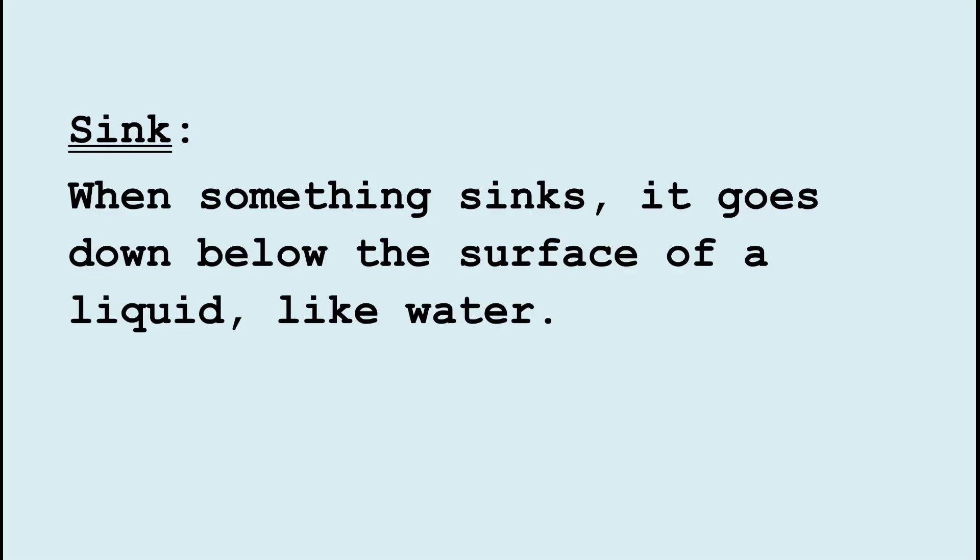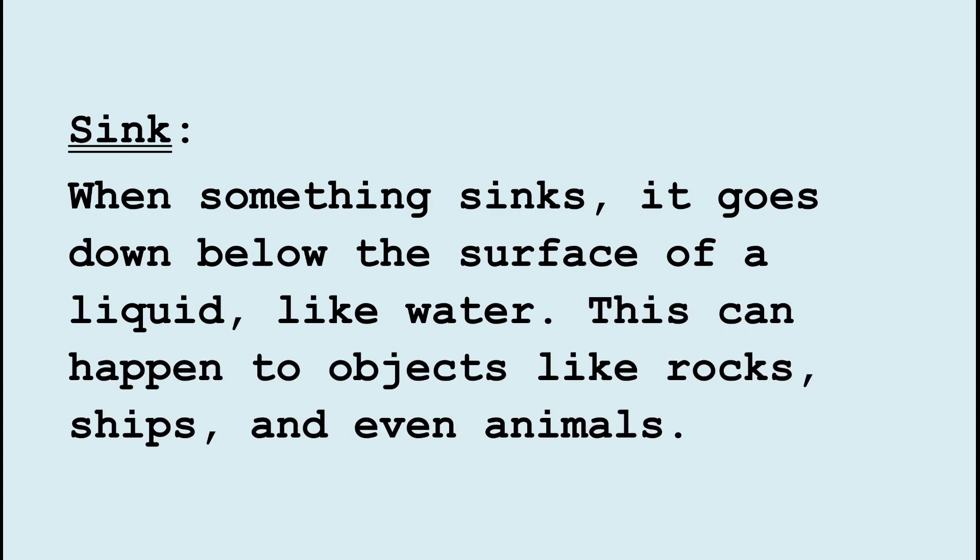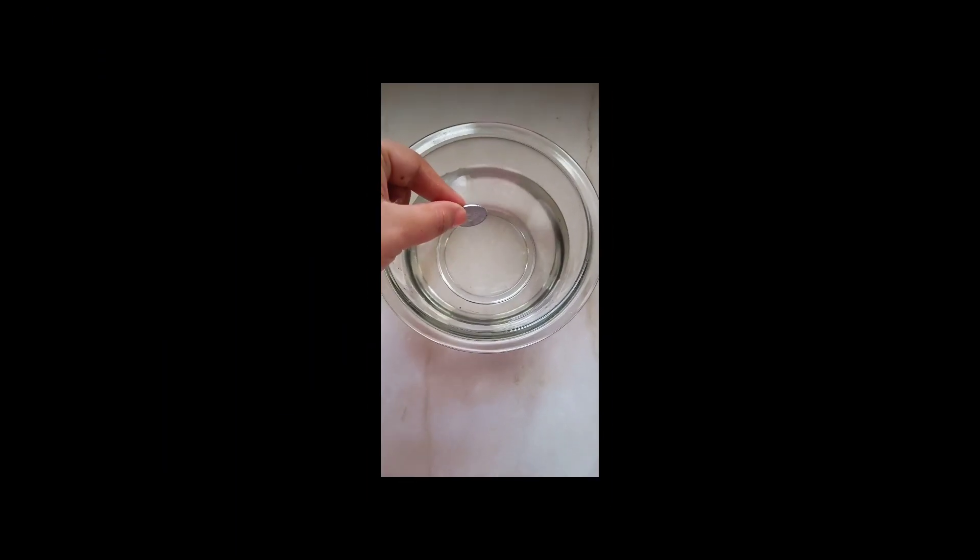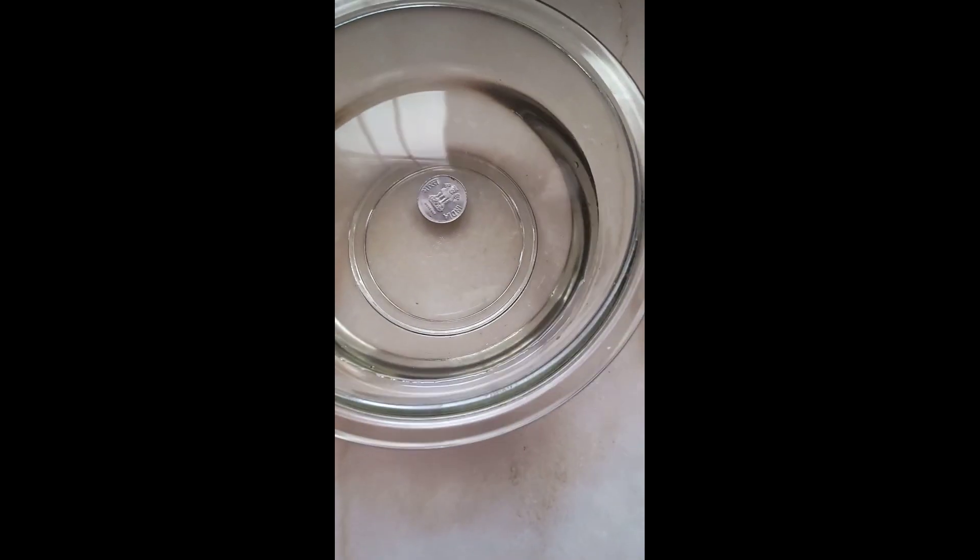Let's start with sink. When something sinks, it goes down below the surface of a liquid like water. This can happen to objects like rocks, ships, and even animals. For example, if you drop a coin in a pool, it will sink to the bottom.